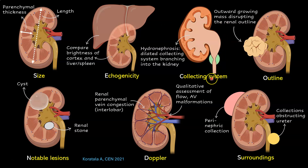C stands for collecting system, where you are looking for hydronephrosis. Hydronephrosis appears as an anechoic — that is, black — branching area. You will be able to see a dilated renal pelvis and calyces. You may or may not always see the source of obstruction, such as a stone.